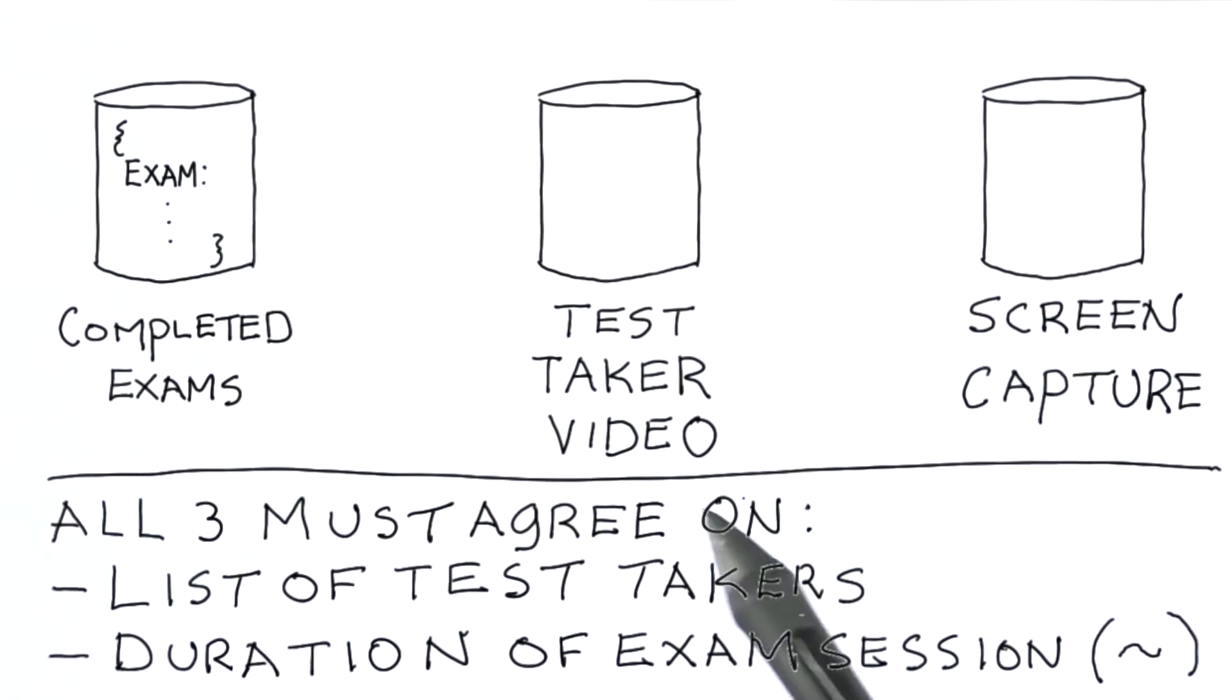Now, you're probably thinking, what if somebody took an exam and the record doesn't exist in any one of these three databases? Well, that's exactly right. As I mentioned at the beginning of this, this is a difficult problem to address because we don't know what we don't know. In that case, using the solution I've just described, we would not detect the missing exam record.